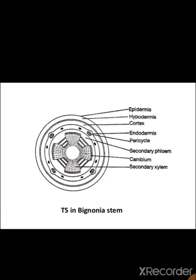The transverse section of the Bignonia stem shows four wedges or patches clearly visible in the center area, due to the abnormal activity of the normal position cambium.